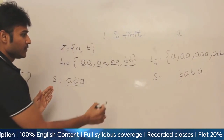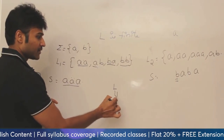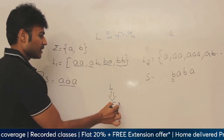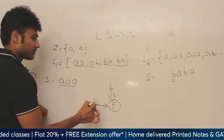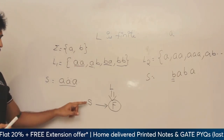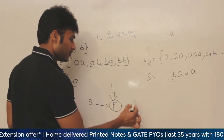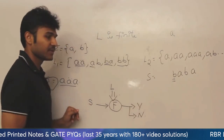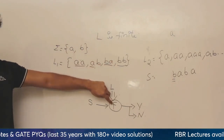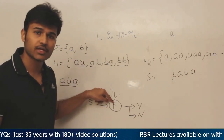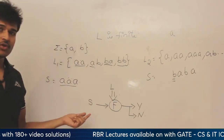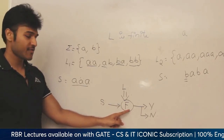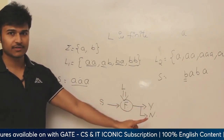So, the simple thing is: how can you, given a language, come up with a finite representation? A finite representation which can be stored in memory, using which, if I give a string, you should be able to say yes, this string is in the language, or no, this string is not in the language. For a language, I want a finite representation — I want to store it on a computer in a finite amount of memory, execute on it, and given a string, determine whether this string is present in the language or not.